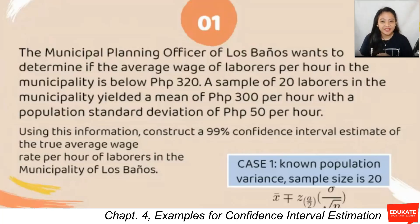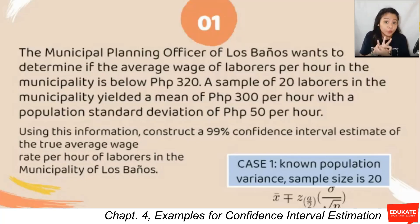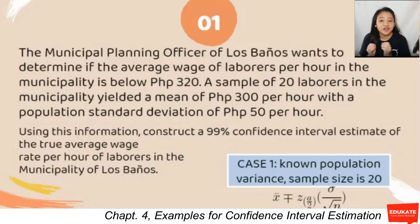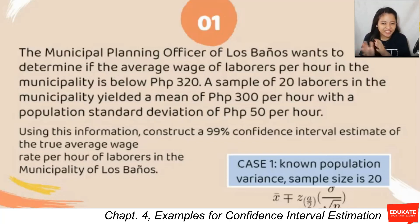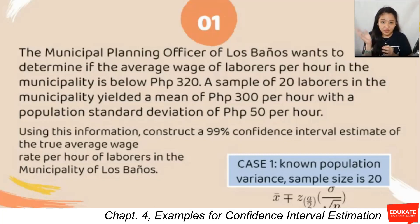First, determine which case applies. Case one has known population variance; cases two and three have unknown population variance. Since a population standard deviation is given — and squaring the standard deviation gives variance — we have a known population variance, so this falls under case one.